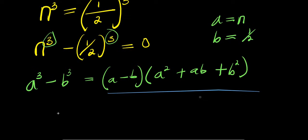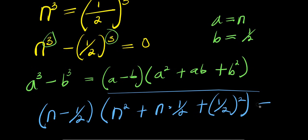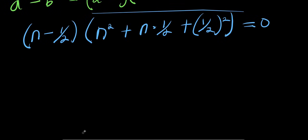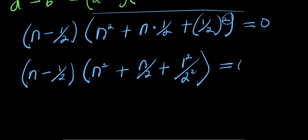So applying that here, we get (n minus 1 over 2) times (n squared plus n times 1 over 2 plus (1 over 2) squared) equals 0. I can distribute: n squared plus n over 2 plus 1 squared divided by 2 squared equals 0.